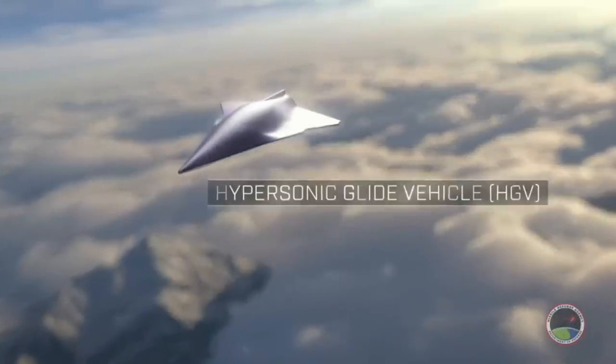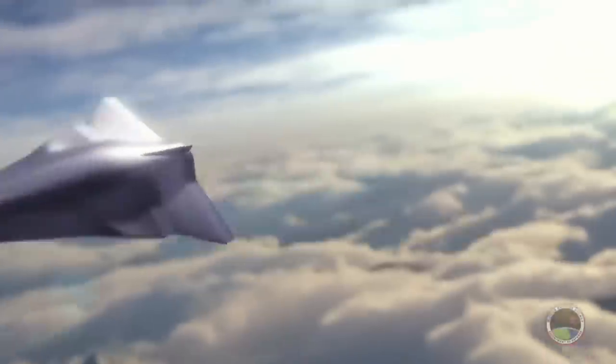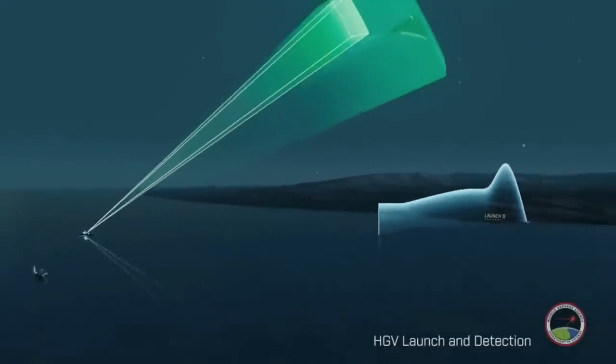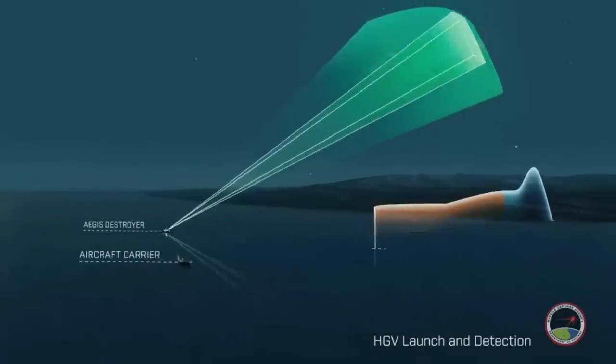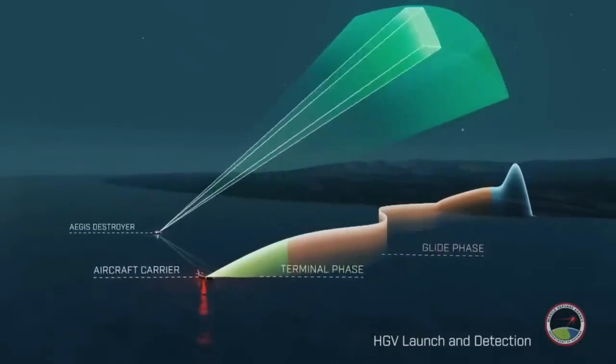Traveling at velocities greater than Mach 5, hypersonic glide vehicles fly at lower altitudes and are more maneuverable than ballistic missiles, allowing them to maneuver after launch in a way that evades radar tracking and intercept.